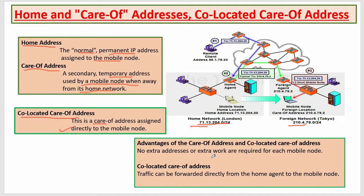The advantage of care-of address is that no extra addressing or extra work is required for each mobile node. Acquiring a different ID in the foreign network is only for internal process — anyone can send data and the home location knows our current position. That is why it is used internally for communication; externally we do not need to change any number. Just a software setting has to be changed to allow communication with another network. That is the biggest advantage of the care-of address.